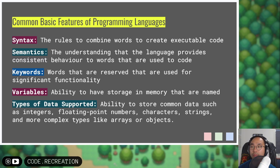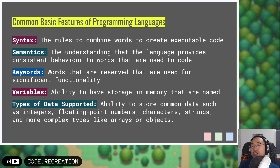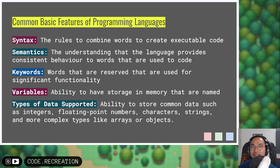There are some common basic features of a programming language. First, there is syntax — the rules to combine words to create executable code. Then there are semantics: the language provides consistent behavior and we must use it properly to have our code do proper things. Because sometimes you could write full gibberish — horrible combinations of words that don't make sense. Even though you spelled them right, that does not mean it made a coherent sentence. In the same way, even if you memorize all the proper Python functions but don't use them properly, you will get your semantics wrong.